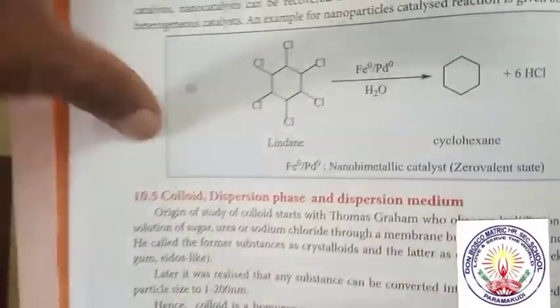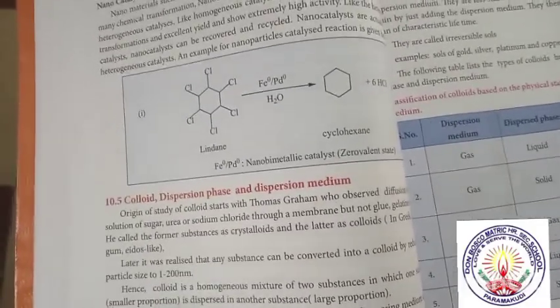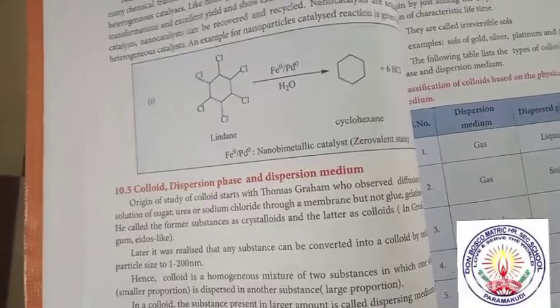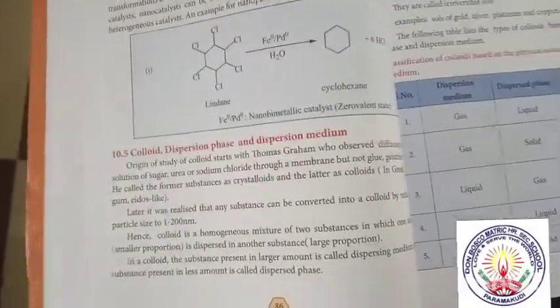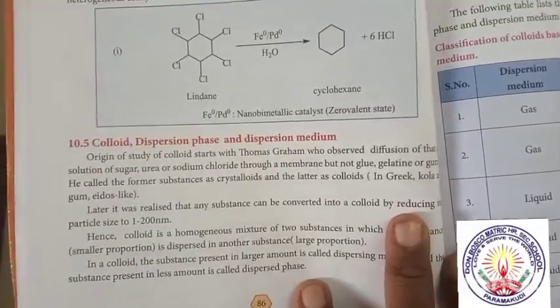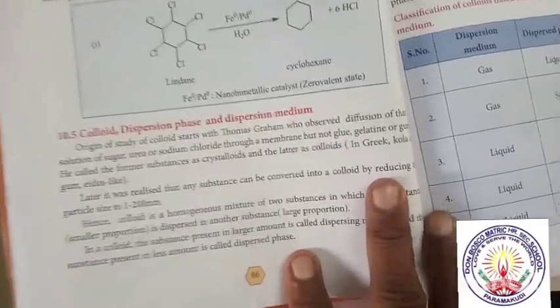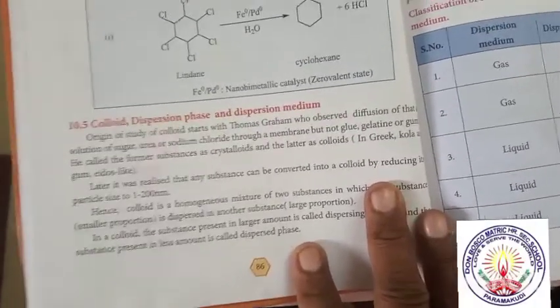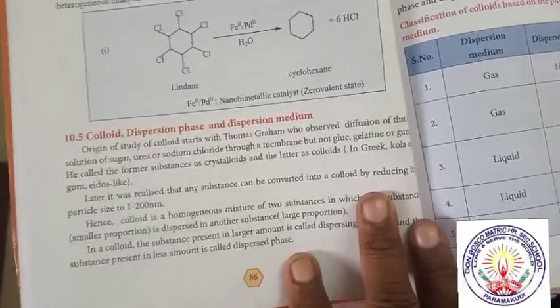Next we discuss about colloids. Colloidal materials are called colloids. In the colloid, there is a dispersion phase and dispersion medium. The origin of study of colloidal materials starts with Thomas Graham, who observed diffusion of solutions of sugar, urea, or sodium chloride through a membrane, but not glue, gelatine, or gum. He called the former substances crystalloids and the latter colloids.